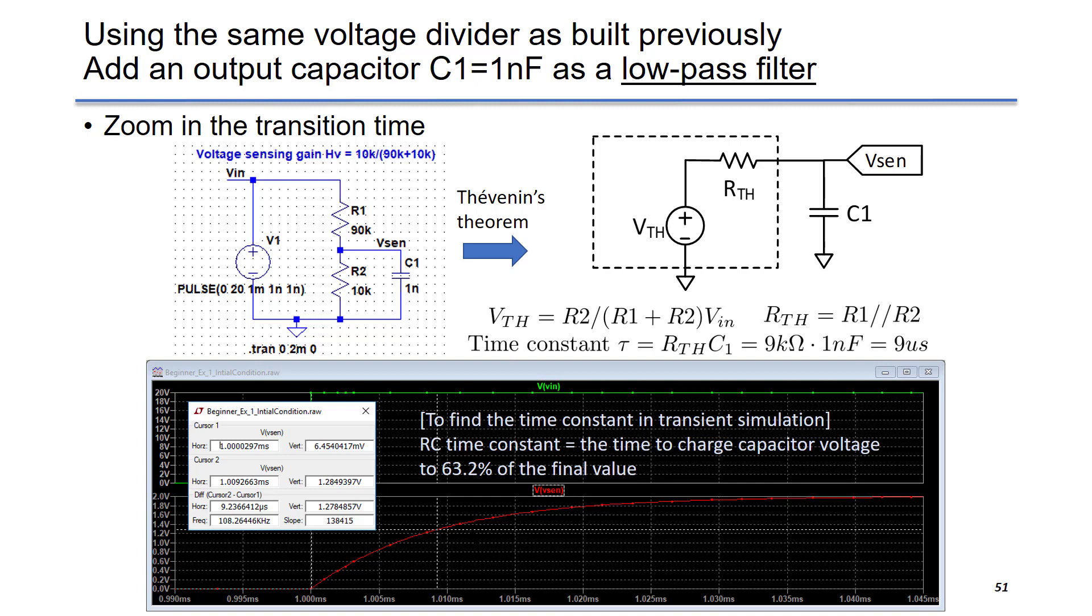So the time constant is built by Rth times C1 equals to 9 kilo ohm times 1 nanofarad gives you 9 microseconds. So if you run a simulation, you put V in and V sense here. You can see by using the cursor, you can find the time constant. Time constant is defined as the voltage goes to about 63% of the final value. We can see the difference between these two points is about 9 microseconds, which matches our result.